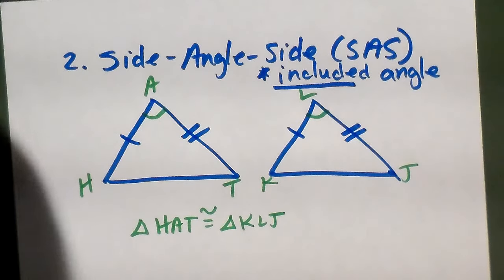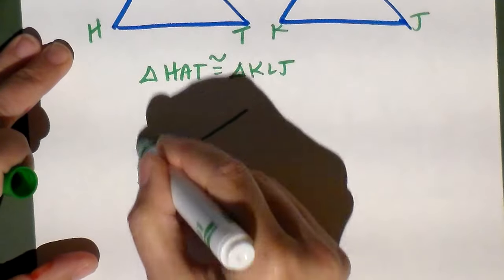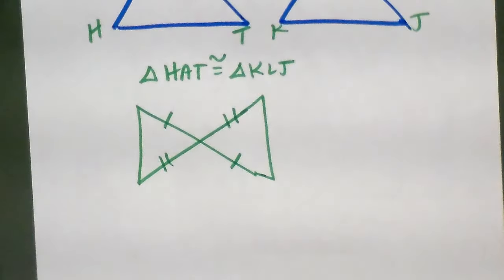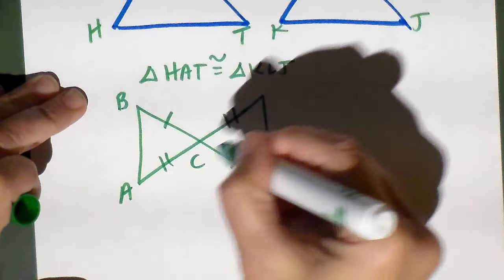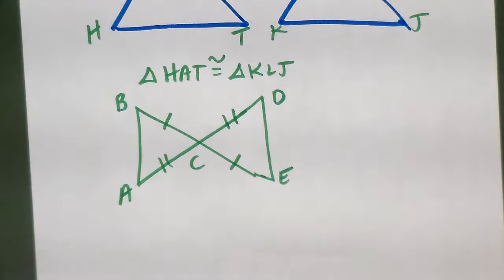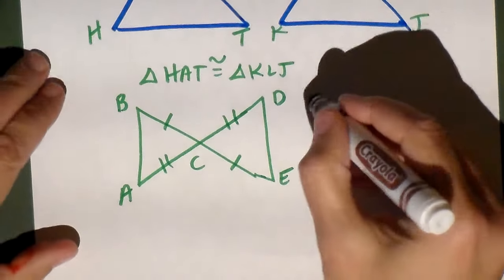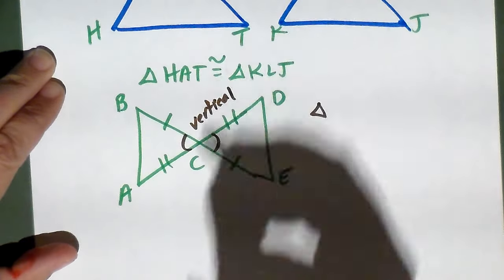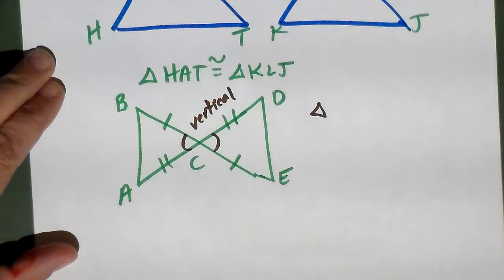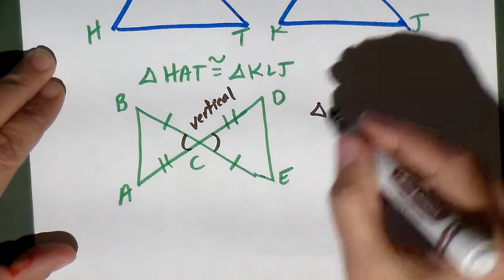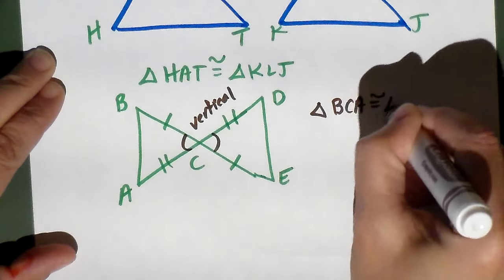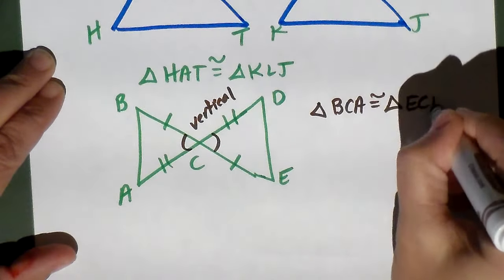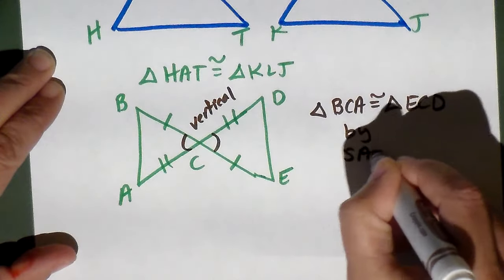An example of side-angle-side is the bow tie configuration. If these two sides are the same and these two sides are the same, are the triangles congruent? I've got vertical angles in the middle, so I can label those. Now I have a side-angle-side pattern. Triangle BCA is congruent to triangle ECD by side-angle-side, going from one tick mark to two tick marks in sequence.